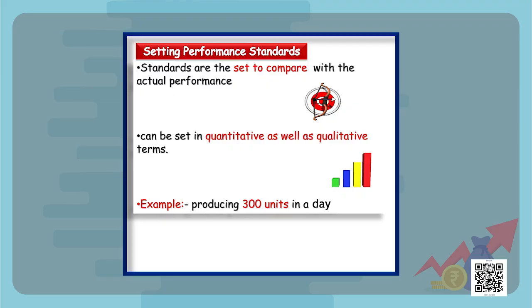Now let's discuss this process in detail. Setting performance standards: while we are planning for the organization, we tend to set some standards which will serve as a controlling technique. For example, suppose every laborer is expected to produce at least 300 units per day — this is setting standards.